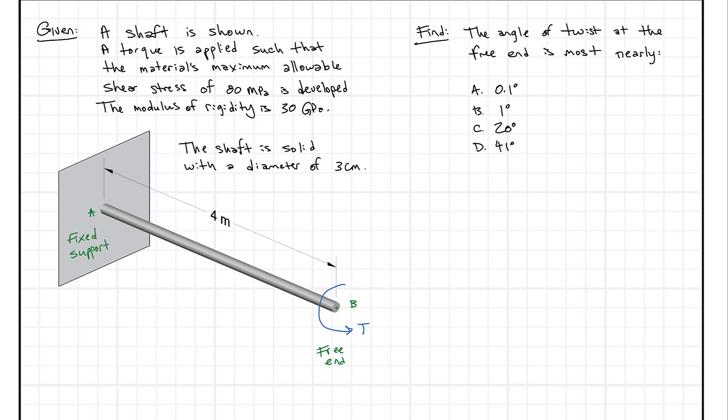So this video is the third in a series on torsion. In the previous videos we learned about torque and twist. And this question kind of puts it together because we're given a torque at the end of this beam and that torque is applied such that the maximum allowable torsional shear stress is developed in this shaft.